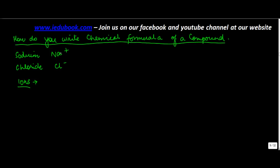To write the chemical formula of a compound there are two things you need to know. First thing is what is the symbol of the elements which are combining.